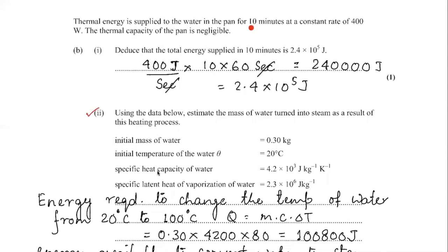Thermal energy is supplied to water in a pan for 10 minutes at a constant rate of 400 watts. The thermal capacity of the pan is negligible. To deduce the total energy supplied: energy is power multiplied by time. Power is 400 watts, which is 400 joules per second. Time is 10 minutes, converted to 600 seconds. So total energy is 400 × 600 = 2.4 × 10⁵ joules.